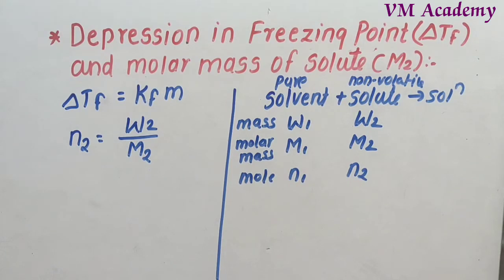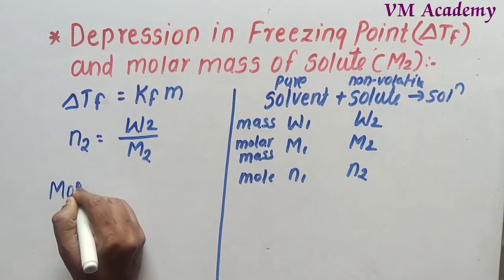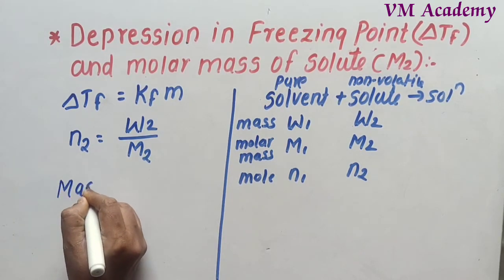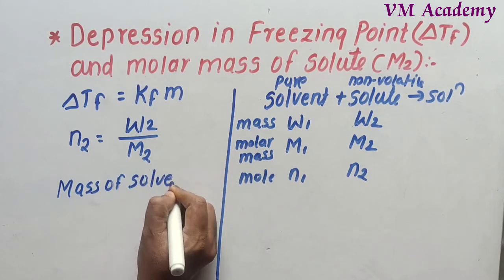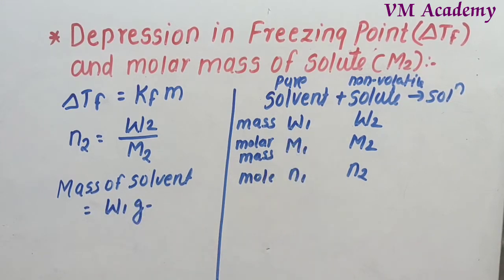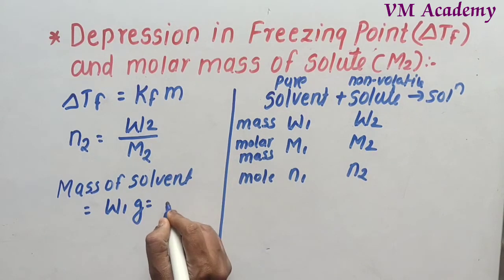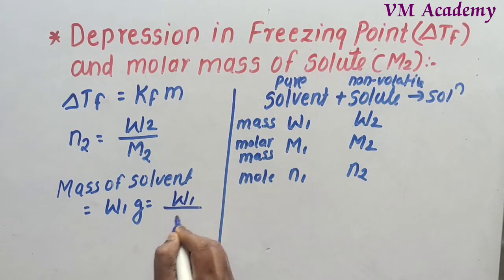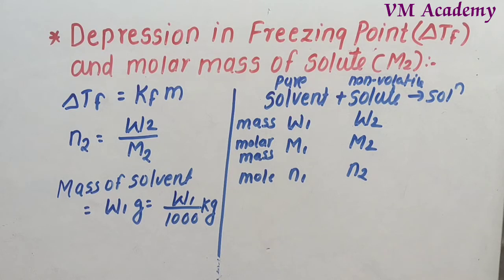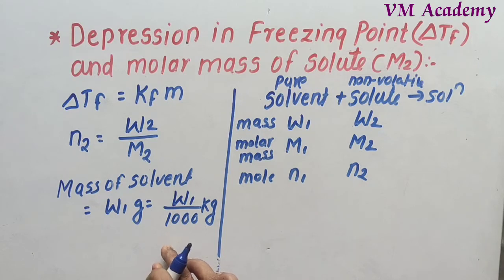Suppose we prepare a solution by dissolving W2 grams of non-volatile solute in W1 grams of solvent. Then the number of moles of solute N2 = W2 / M2. The mass of solvent is W1 grams, but we need it in kilograms, so we divide by 1000: mass of solvent = W1 / 1000 kg.